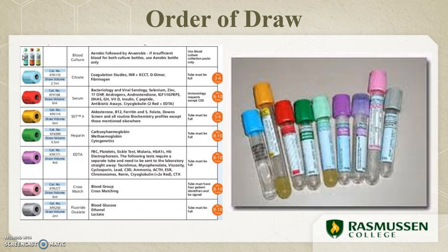When drawing blood using any of these methods, it is really important to use the correct order of draw. This prevents cross-contamination between tubes from skin bacteria or other additives. The correct order of draw is: yellow or blood culture bottle, light blue tube, red tubes, red marble or tiger top, green, light green, lavender, pink, gray, or dark blue. We will spend a lot of time going over these in class, so don't worry if this goes a little fast.